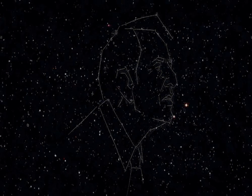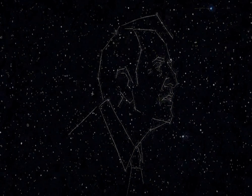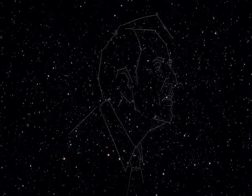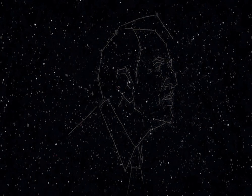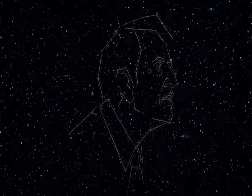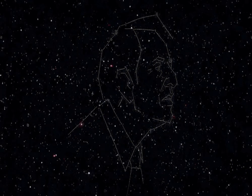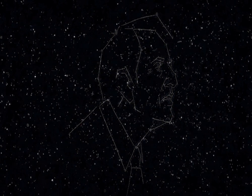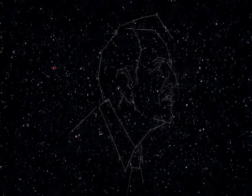In 1973 Carl Sagan published The Cosmic Connection, an extraterrestrial perspective which included the following passage. Our sun is a second or third generation star. All of the rocky and metallic material we stand on, the iron in our blood, the calcium in our teeth, the carbon in our genes were produced billions of years ago in the interior of a red giant star. We are made of star stuff.